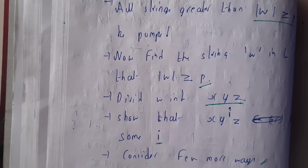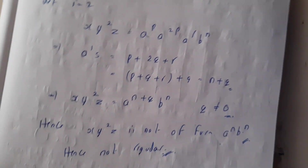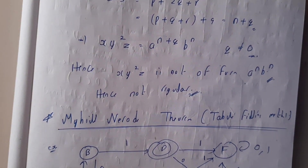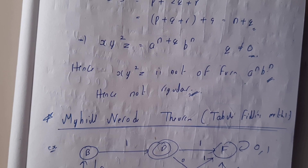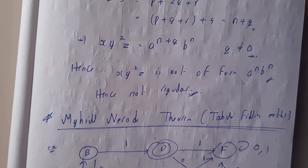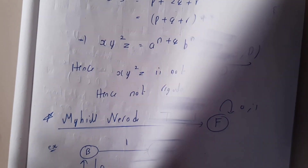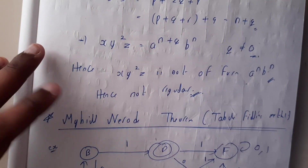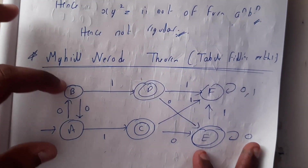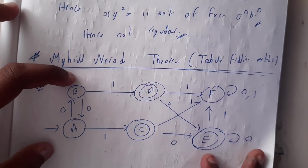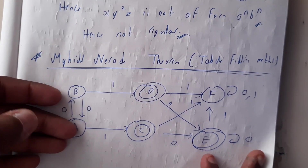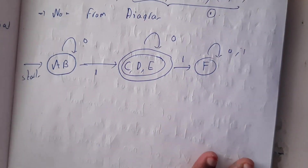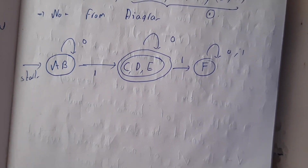I hope everyone got a clear idea on this. In the next tutorial we will be going through the last topic of this chapter — the Myhill-Nerode theorem, also known as the table filling method. It is really simple and easy, and this method is also used for minimizing deterministic finite automata. Let us meet in the next tutorial. Thank you for watching.